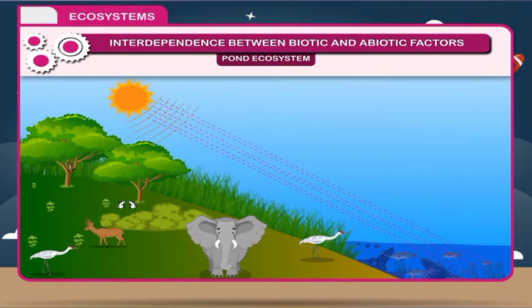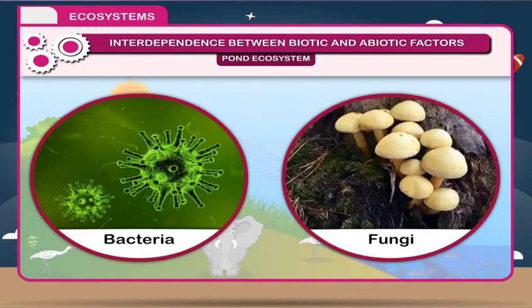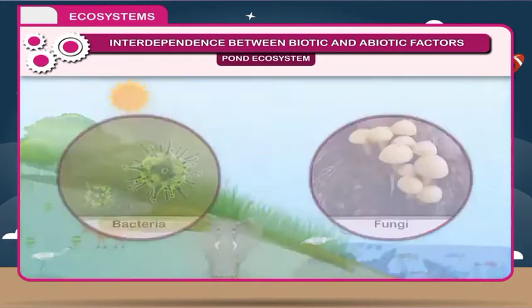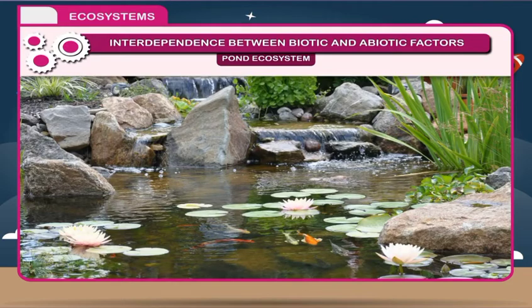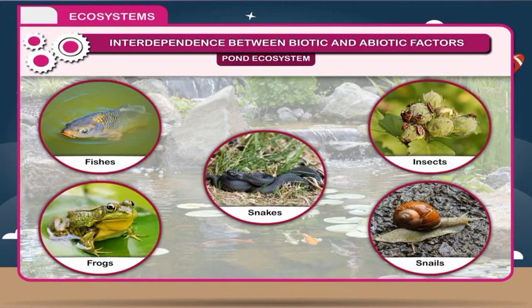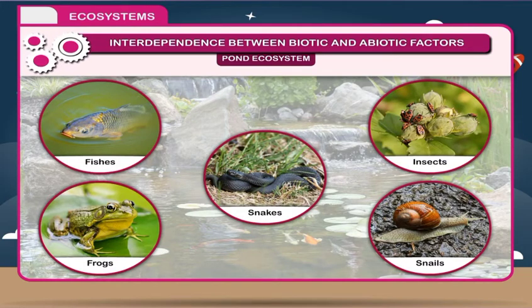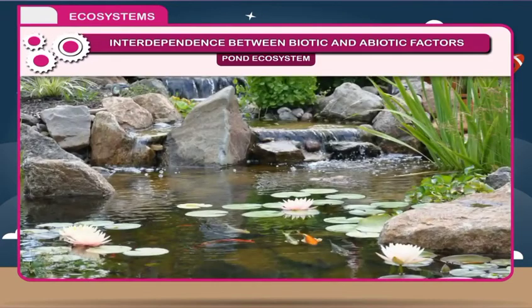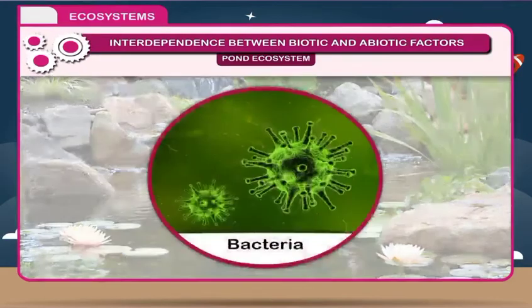These plants also host plenty of bacteria and fungi which act as decomposers. The fauna or animals found in the ecosystem include small and varied fishes, insects, snakes, frogs, and snails. The smaller ones feed on plants, whereas the larger organisms feed on small fishes and insects. All biotic factors of the pond ecosystem produce organic waste. The dead and decaying organic matter is decomposed by decomposers like bacteria.